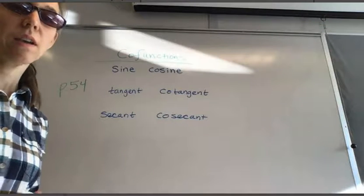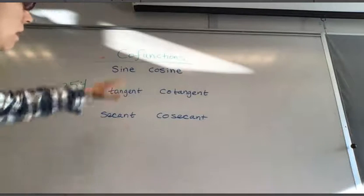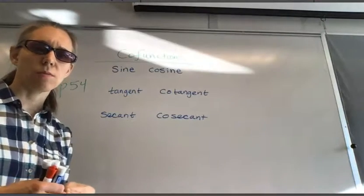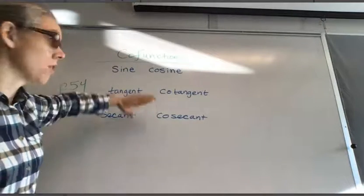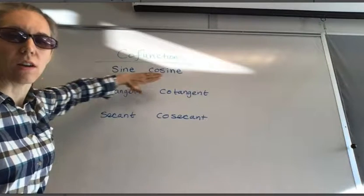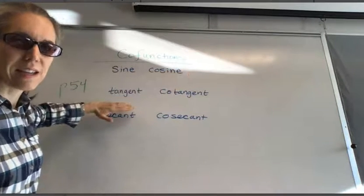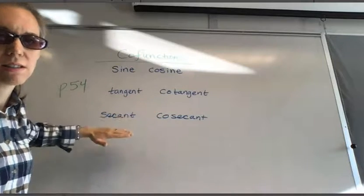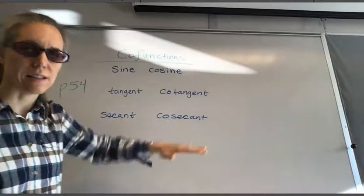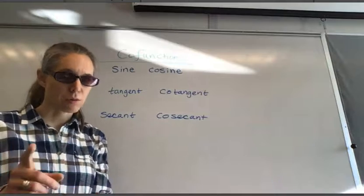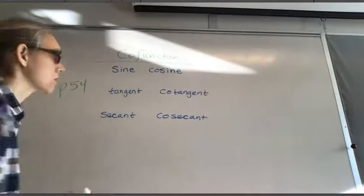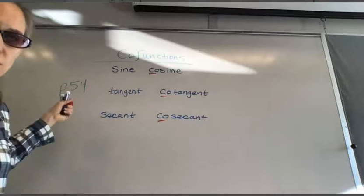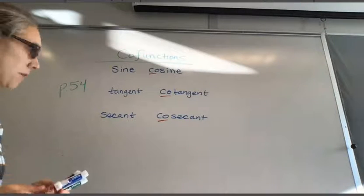The next topic is co-functions. Co-functions are pairs of functions that have a relationship with complementary angles: sine and cosine, tangent and cotangent, secant and cosecant. These are not reciprocal functions — they are co-functions. The relationship between them is found on page 49.